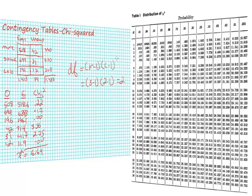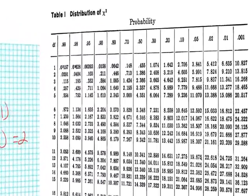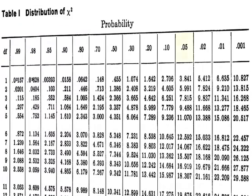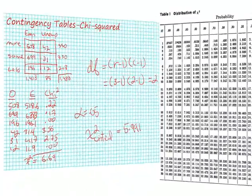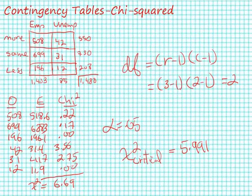Then I need to go to my chi-square table and look up my chi-square critical value. In this case I'm going to use an alpha value equal to 0.05, and it turns out that my chi-square critical value from the table lookup is 5.991.